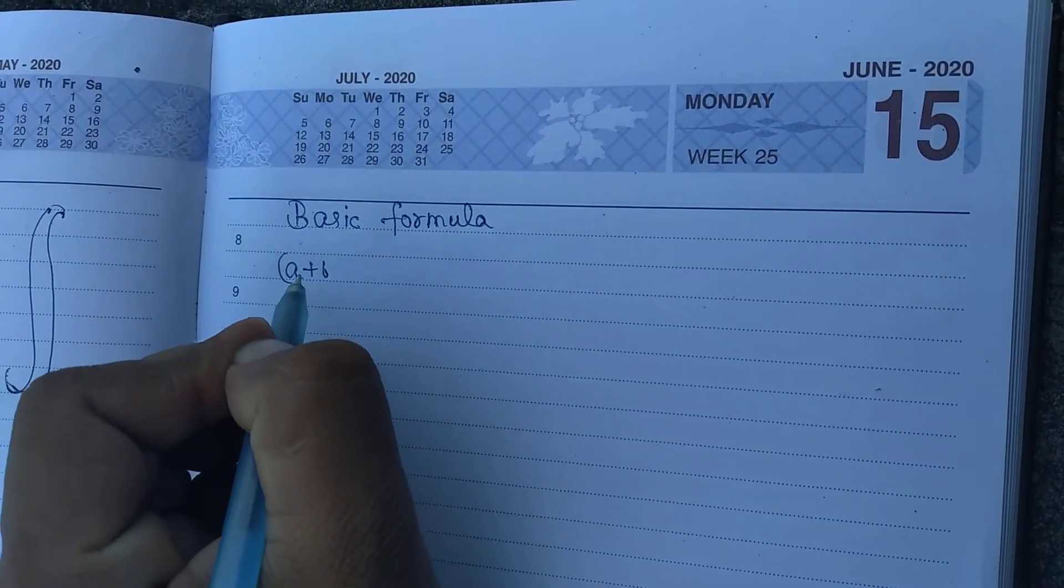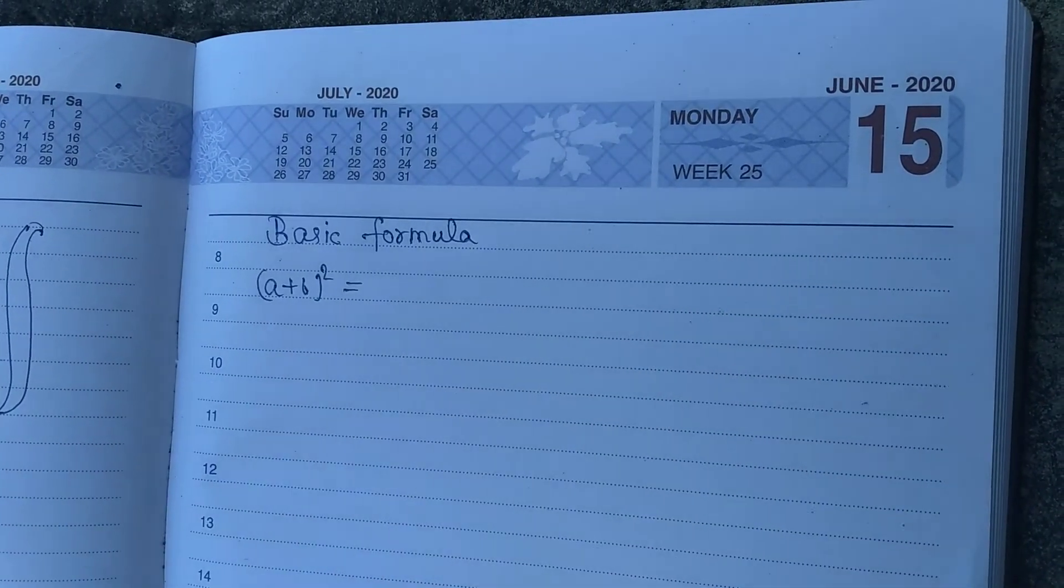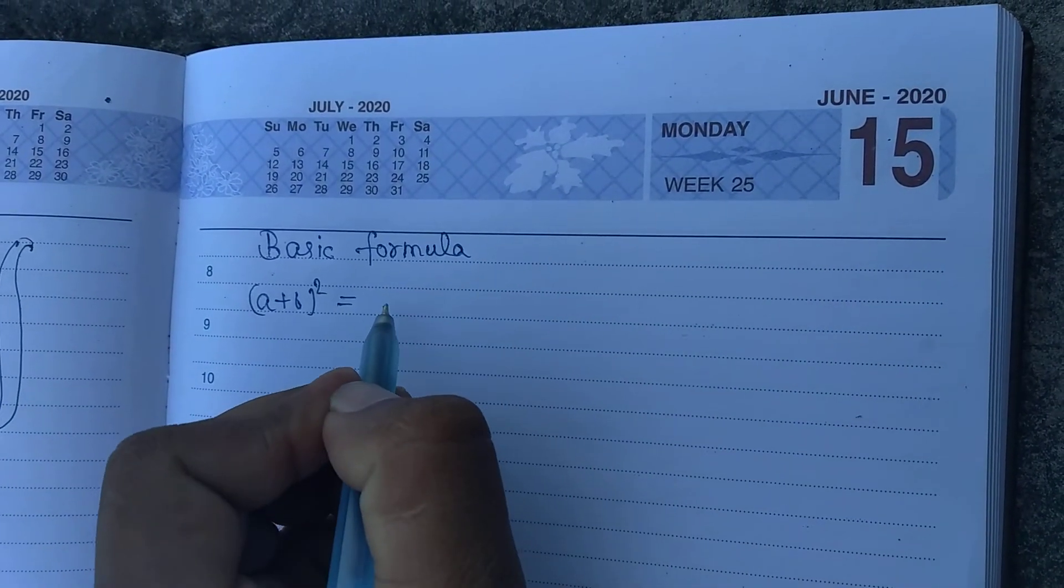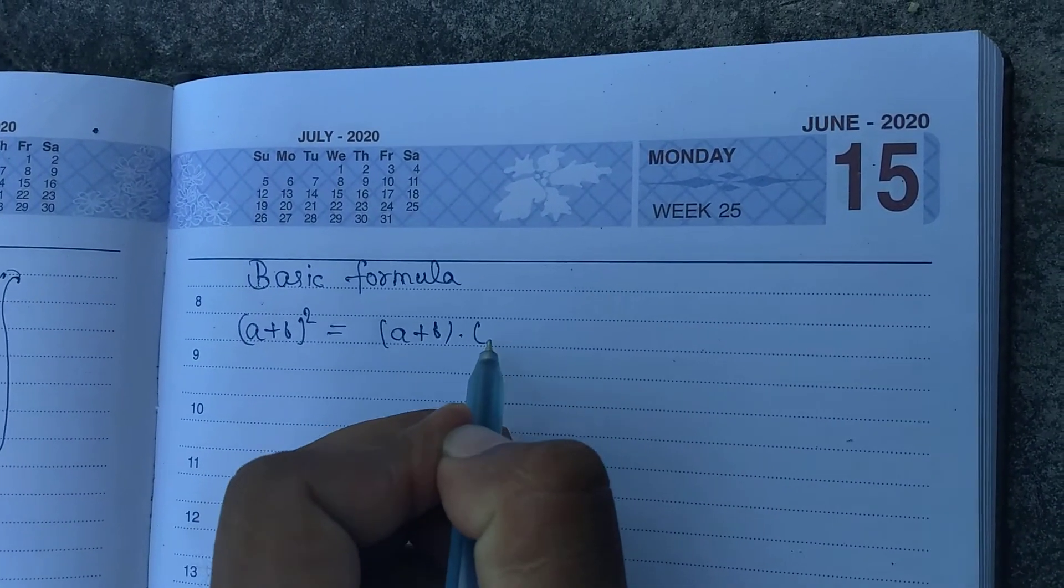Basic formula: a plus b whole square equal to a plus b into a plus b.